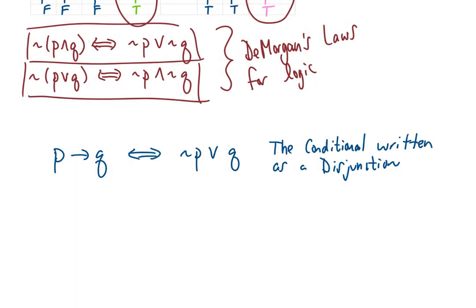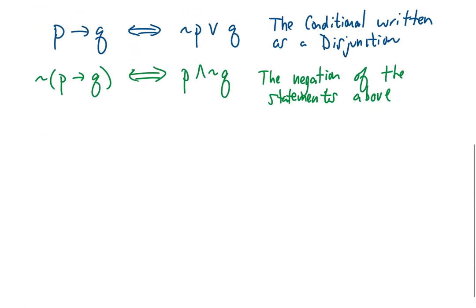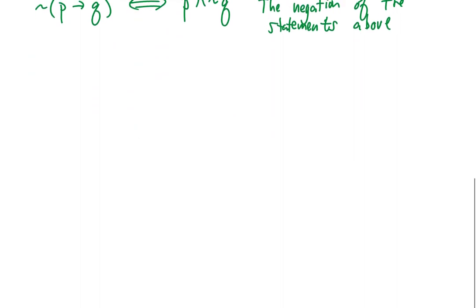We could find the negation of these two statements and those two statements would be equivalent as well. Now we could spend a little bit more time exploring equivalent statements. We'll do that a bit more in the next video. But let's finish this video up by talking about variations on the conditional statement.